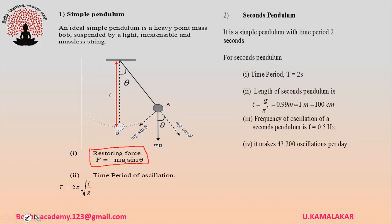The time period of oscillation of a simple pendulum is given as T = 2π√(l/g), where l is the length of the pendulum. Length of pendulum means the distance between the point of suspension and the center of mass of the bob.